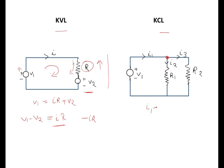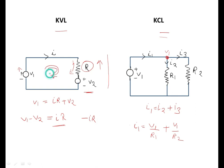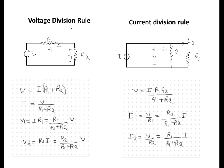In KCL, at a node: I1 = I2 + I3. If node voltage is V1, then I1 = V1/R1 and I3 = V1/R2. When a loop or mesh is considered, this is known as mesh analysis; when a node is used it is known as nodal analysis.